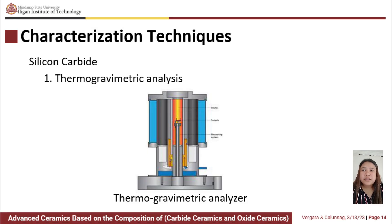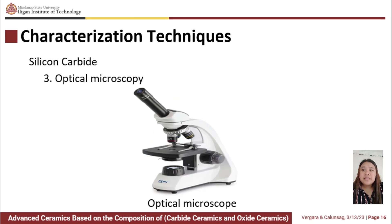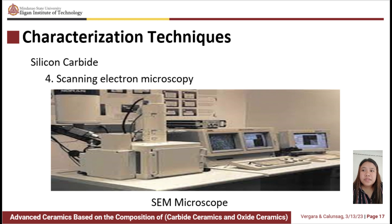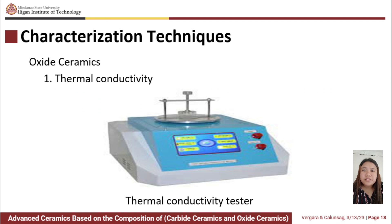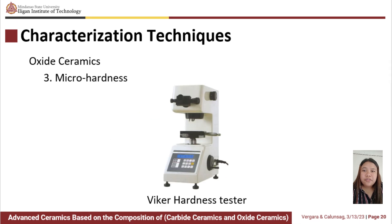These are the characterization techniques for silicon carbide, which include first gravimetric analysis using a thermo-gravimetric analyzer. The next is the handheld XRF spectrometer used for elemental analysis. For image analysis, we have the optical microscope and the scanning electron microscope. For oxide ceramics, we have a thermal conductivity tester for testing thermal conductivity, a dilatometry and thermal expansion machine for thermal expansion, and a micro-hardness tester for micro-hardness.